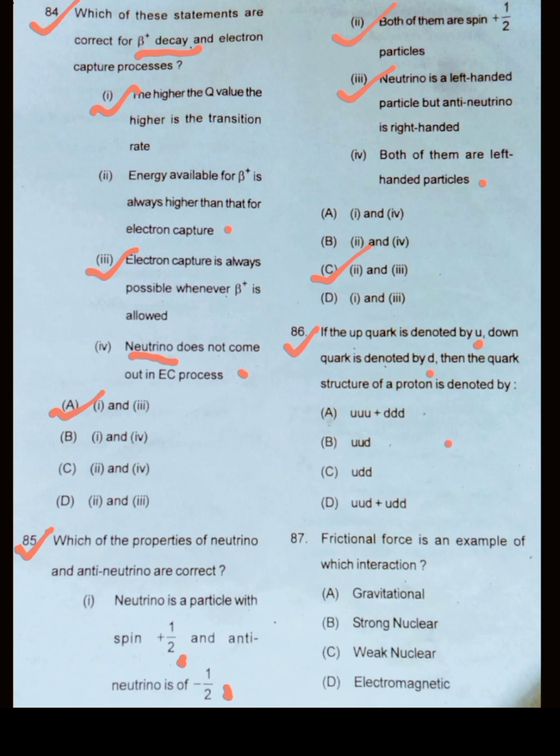We know for proton and neutrons, up and down quark are required. Three of them are required.